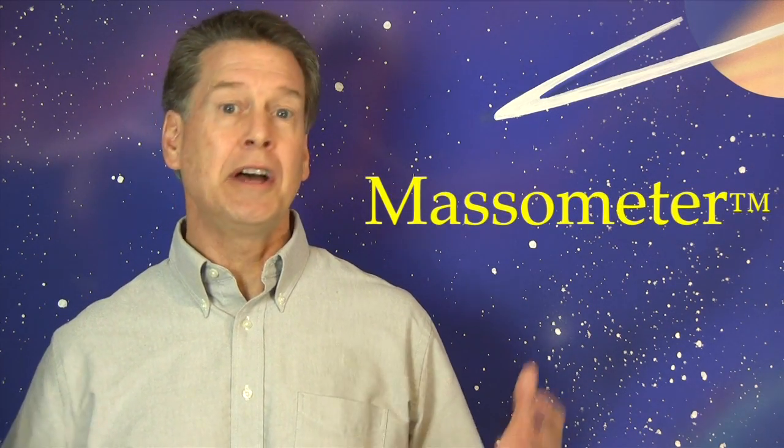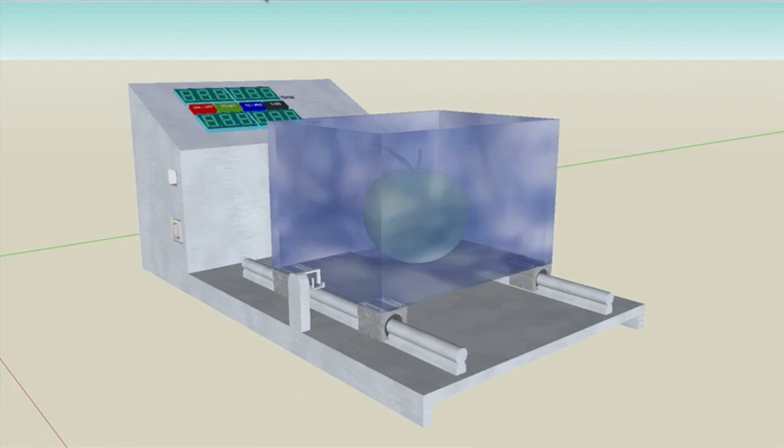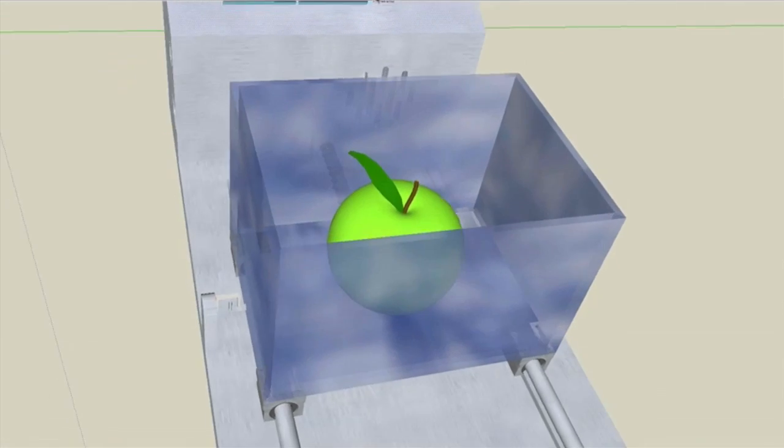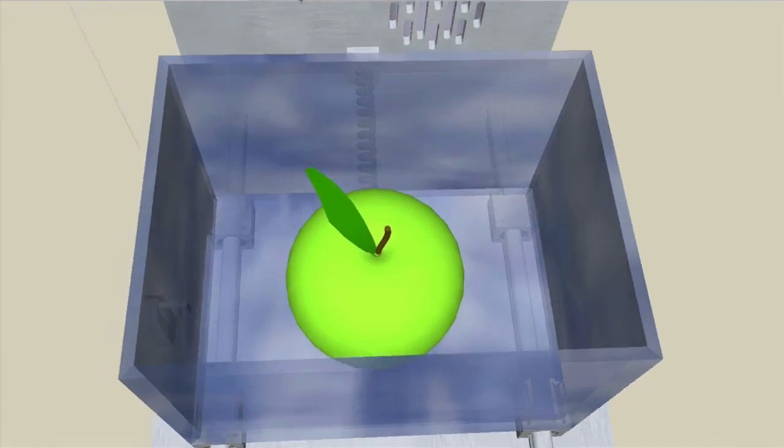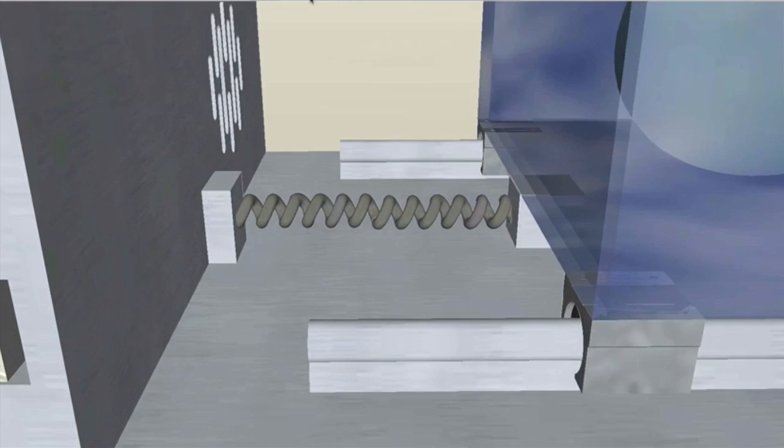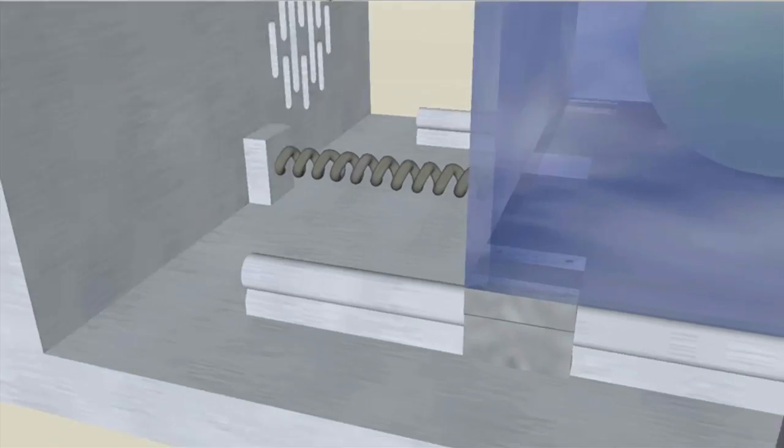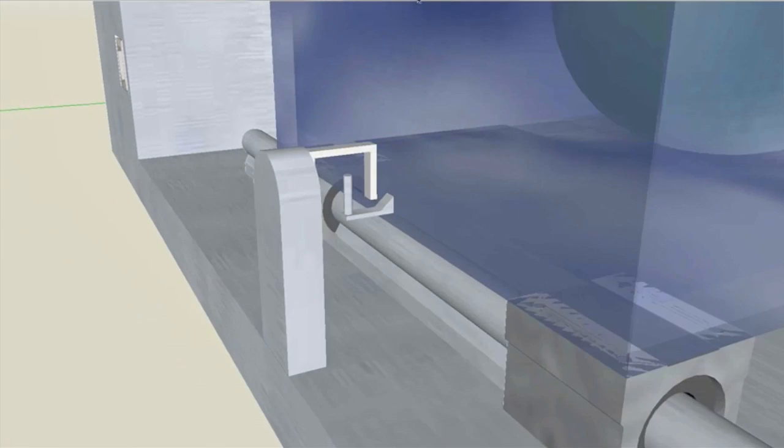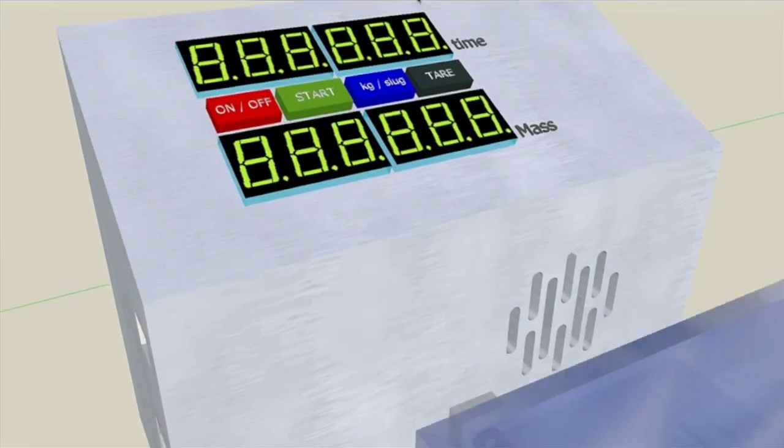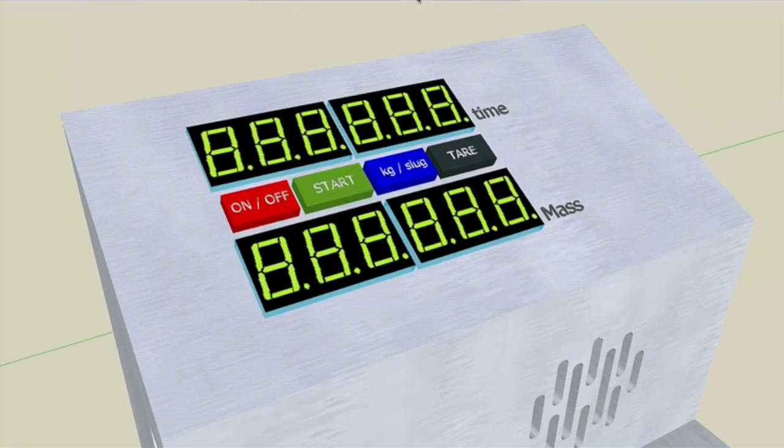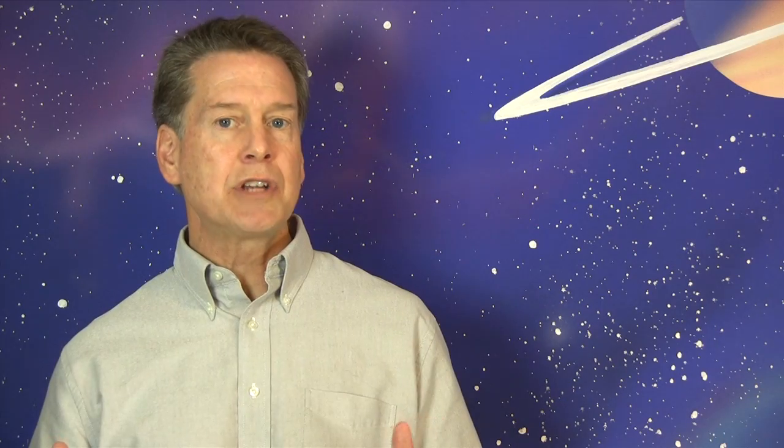Such a device to measure mass would be called a massometer. I would load an unknown mass into its keeper. Maybe this. I would nudge the keeper, and because of the attached spring, the keeper would then vibrate back and forth. The massometer would time the rate of vibration and read out the object's mass. High mass objects would vibrate slowly. Low mass objects would vibrate quickly.